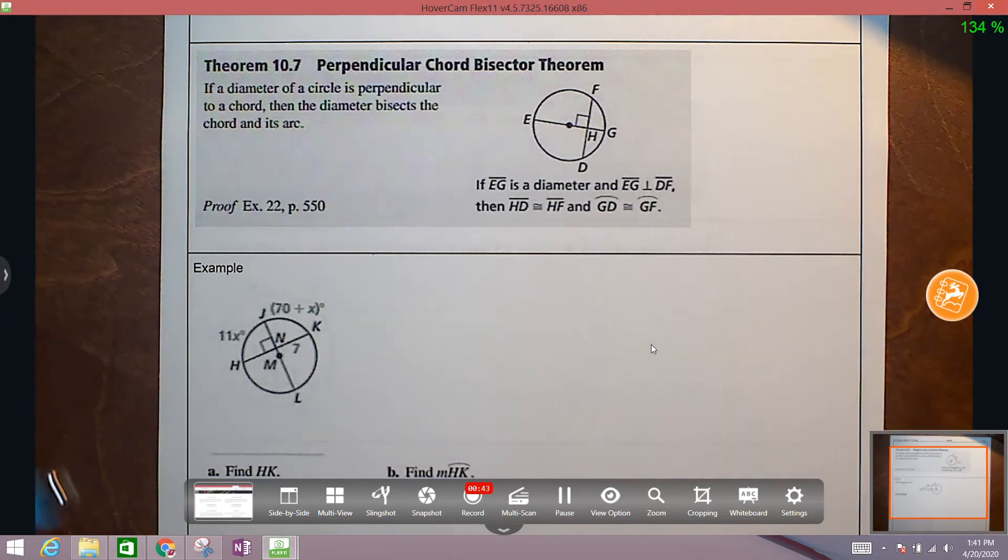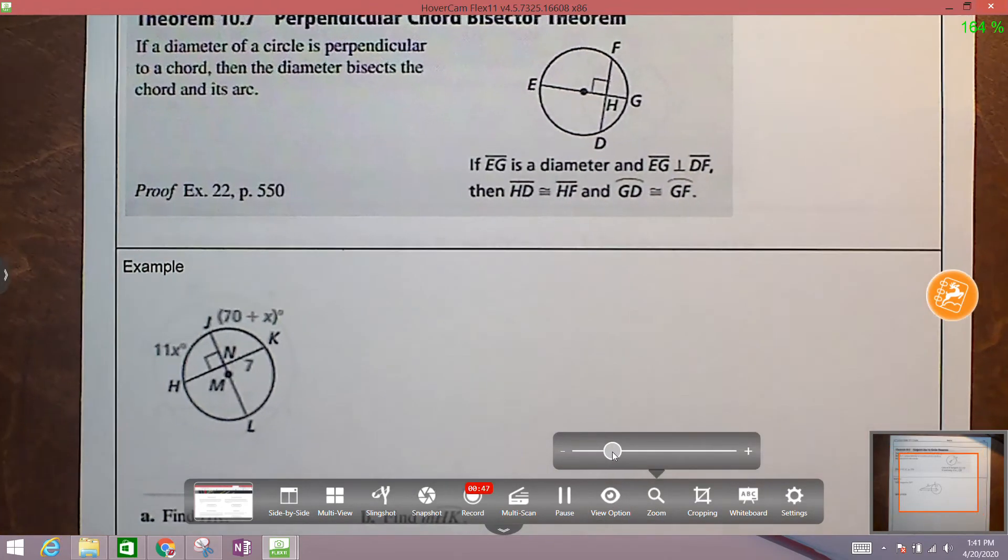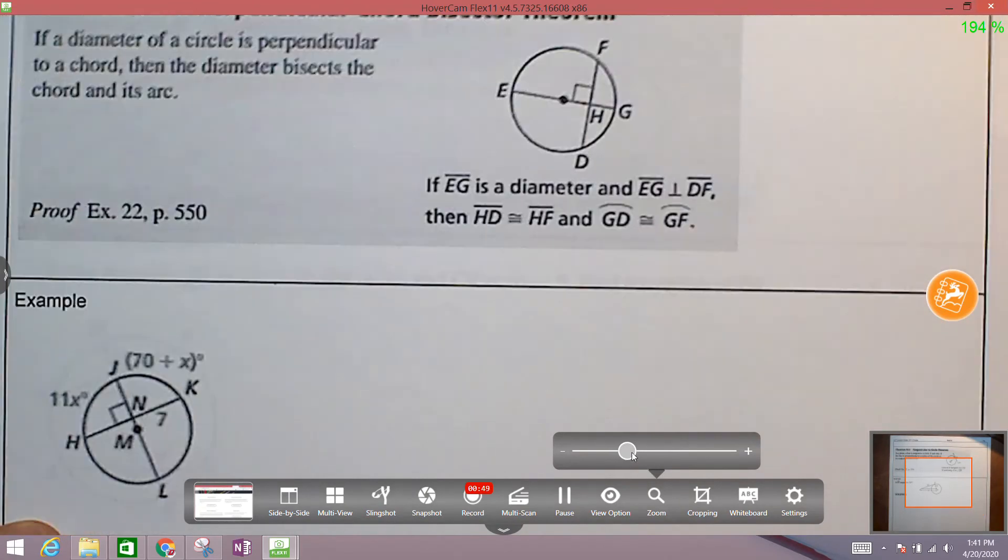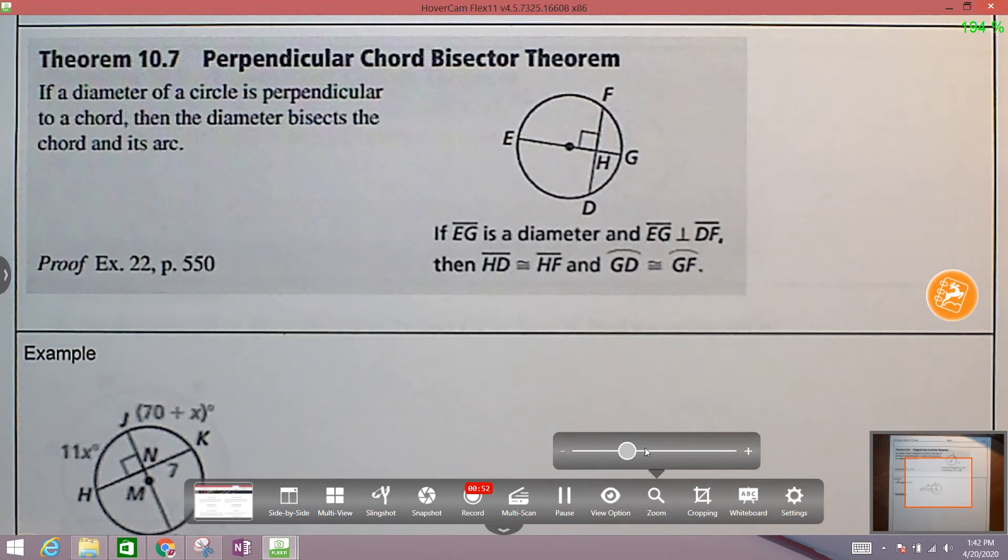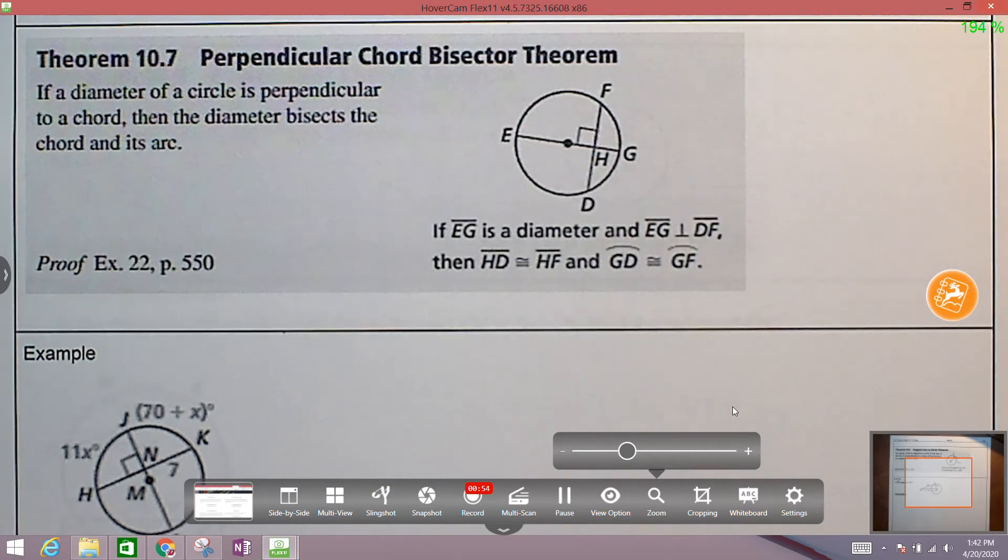Let me just zoom in a little bit. Okay, so theorem 10.7, Perpendicular Chord Bisector Theorem. If a diameter of a circle is perpendicular to a chord, then the diameter bisects the chord and its arc.